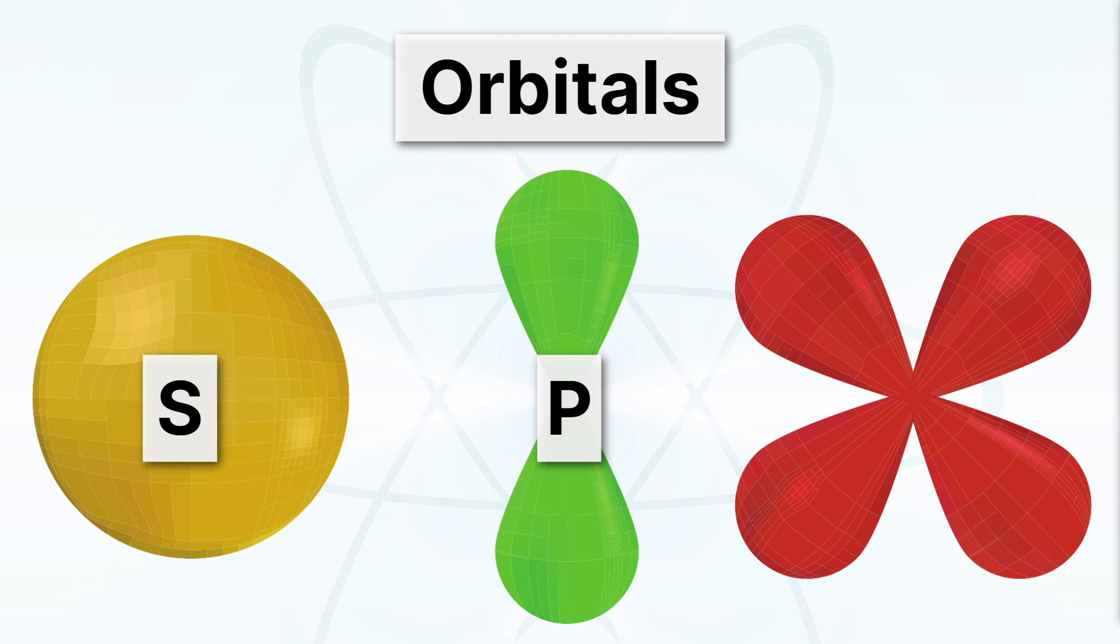This next one is a p orbital, kind of a funny shape, right? And the electron, again, is smeared out and could be anywhere within that shape. And lastly, we have a d orbital.